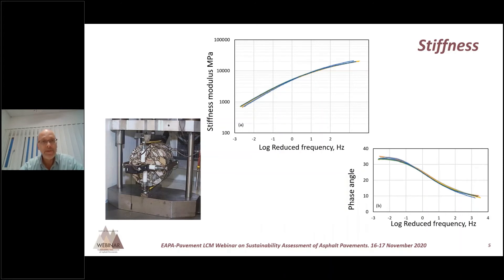Now I will mention a few test methods you can use in durability assessment. I will start with stiffness measurements, because whatever type of distress and whatever material you are looking at, you want to keep track of the stiffness modulus. The surface course adds to the bearing capacity of the road and protects the other layers beneath it. It can also give you some indication of problems at the low or high temperature range.